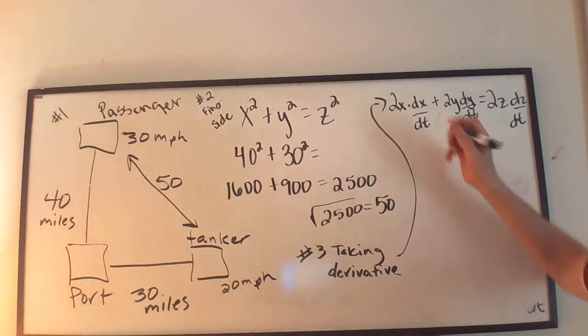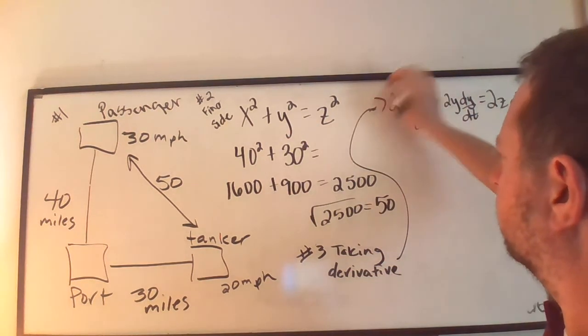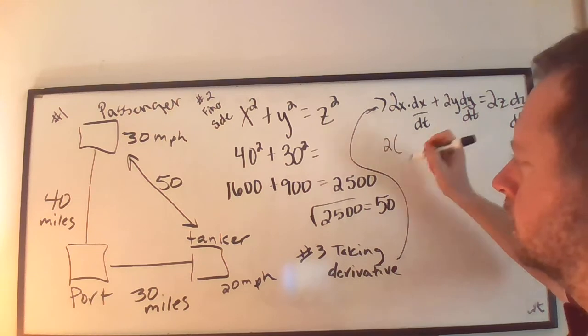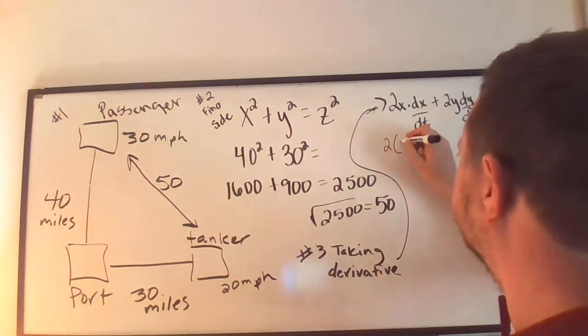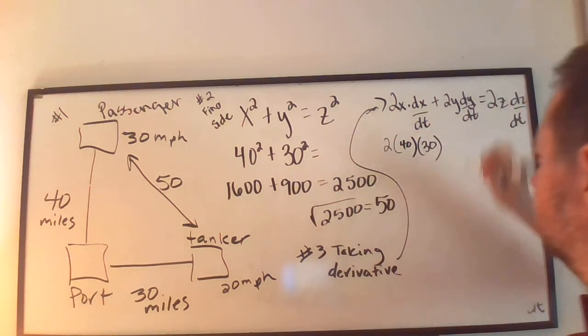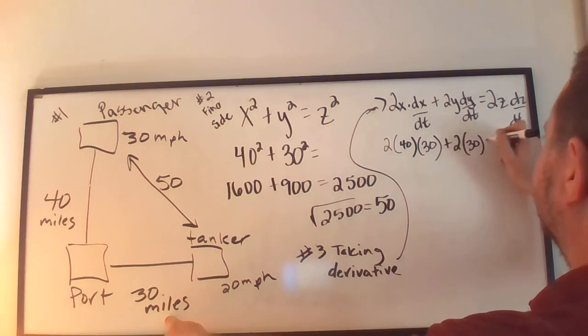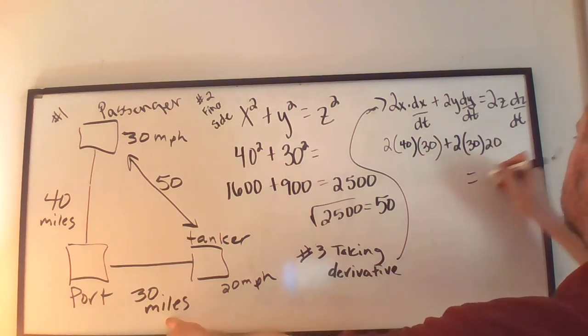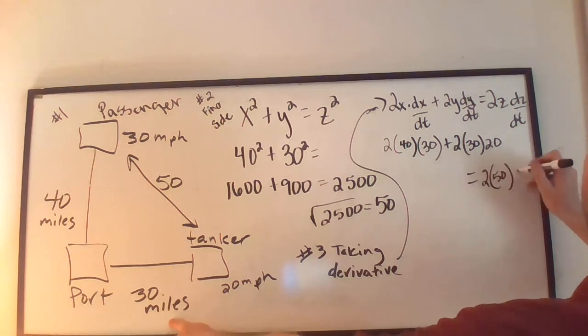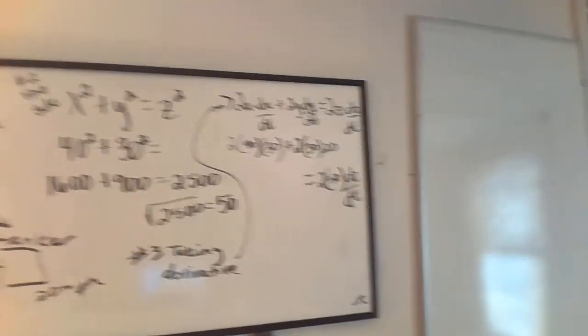Here are things that we know. We know that this is 2 times 40 times 30, that's how fast that boat's going, plus 2 times 30 times 20, is equal to 2 times 50 times dz/dt. Let us move over to here.